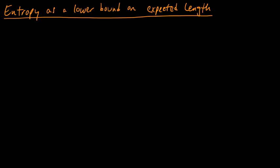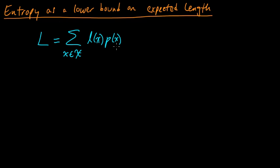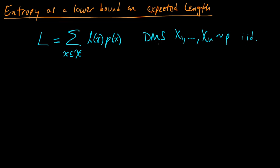Our primary criterion for choosing a symbol code is that we want to achieve good compression. Our metric for how well a code compresses the source is the expected codeword length, defined as the sum over all source symbols of the length of the codeword associated with that symbol times the probability of that symbol occurring. Here p is the PMF for our discrete memoryless source — a sequence of IID random variables.